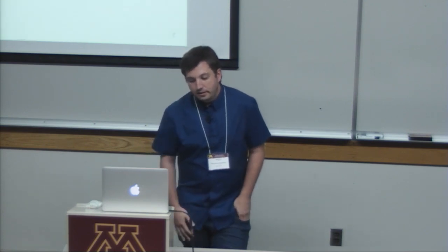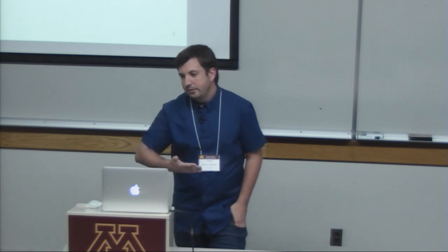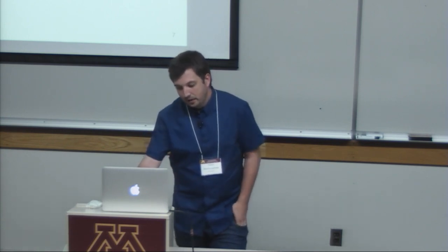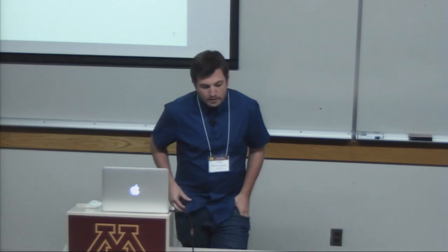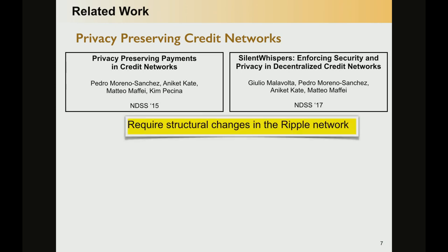The first thought is obviously not to reinvent the wheel, but to look at related work done so far. In our field, we have defined two different architectures to provide privacy-preserving credit networks in a provable manner. These two architectures have strong privacy guarantees, but the problem is that they require changes in the structure of the Ripple network and cannot be directly deployed today.